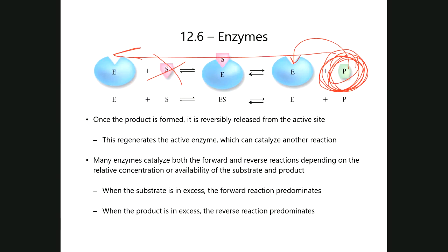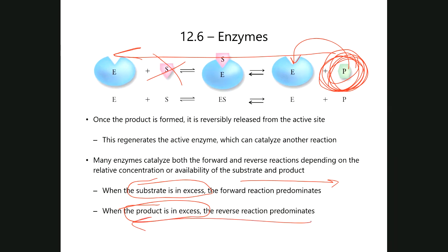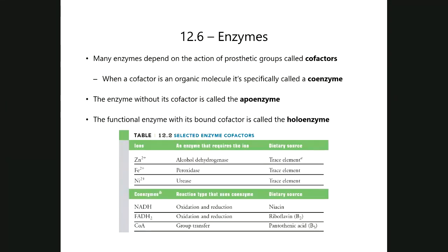Many enzymes depend on prosthetic groups called cofactors. When those cofactors are organic structures, they are specifically called coenzymes. So all coenzymes are cofactors, but not all cofactors are coenzymes. Metal ions are referred to only as cofactors. When we talk about NAD+, NADH, FAD, FADH₂, coenzyme A — these are organic structures and are called coenzymes. Importantly, the vast majority — if not all — coenzymes are derived from vitamins.